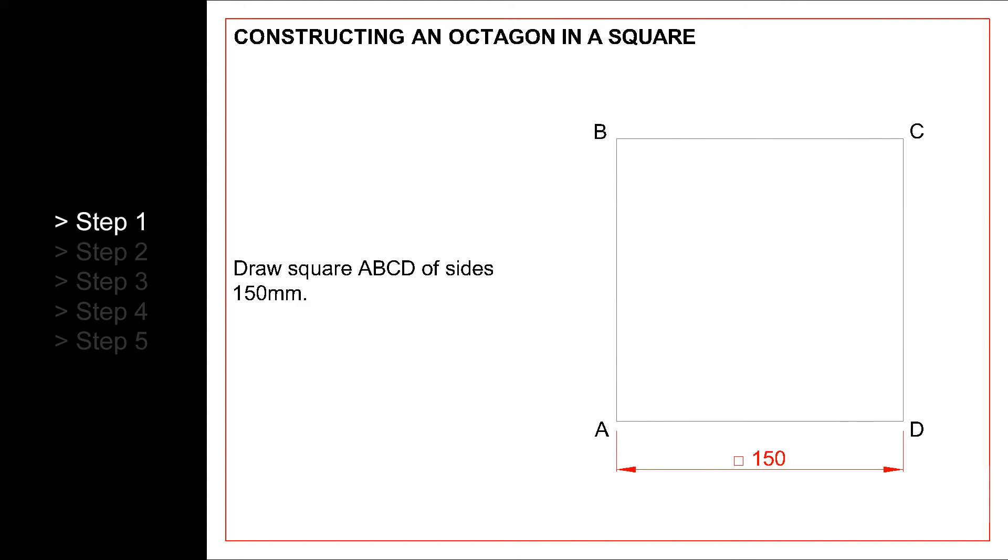First, we need to draw the square. We label its corners A, B, C and D for convenience.